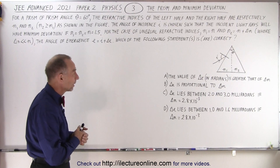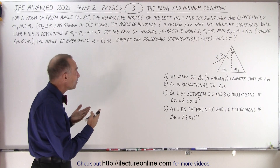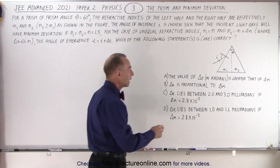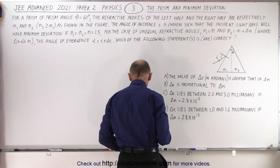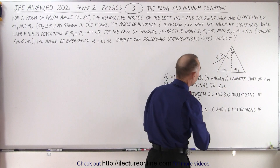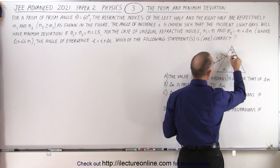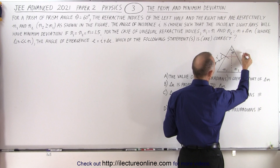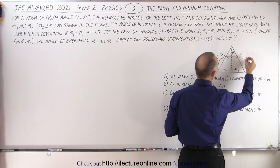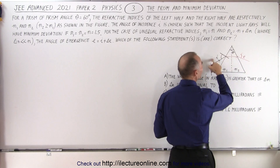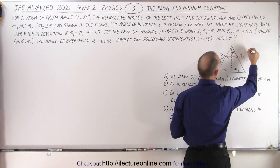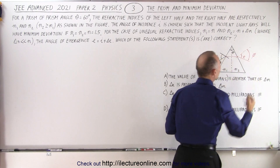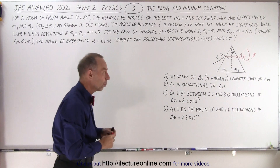Let's find out which of those four are correct. What do we know about the prism and the minimum deviation? Well normally, when n1 and n2 are the same — and that's what we are going to assume initially, being equal to 1.5 — what happens is this incident ray will refract. It will go straight across, parallel to the base, and then at this point it will refract again, and the angle of emergence will equal the angle of incidence. And that's what will give you what we call the minimum angle of deviation, which is this angle right here. Let's call this phi, and that will be a minimum under those conditions.